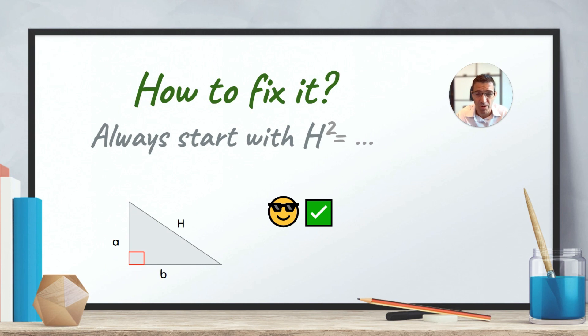So an easy fix for this problem is to always start with H squared equal. If you start with H squared equal, you can't make a mistake. So just do that. Every time you have a right angle triangle, it doesn't matter what the numbers are, whether you know the H, whether you know the A, whether you know the B, just start with H squared equal and then fill in the blanks. And if you're missing H, then it'll be pretty straightforward. If you're missing a short side, you might need to do one line of algebra and then you'll fall on your feet and you'll get the question right, which is good.